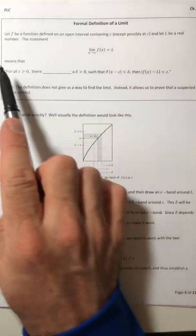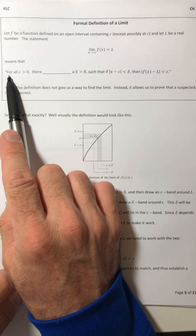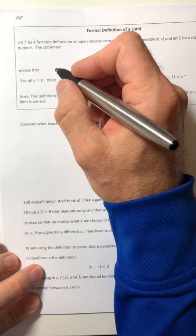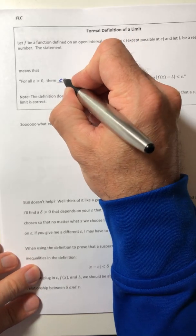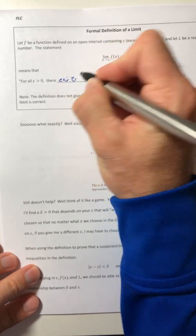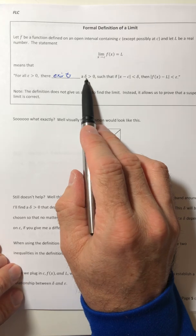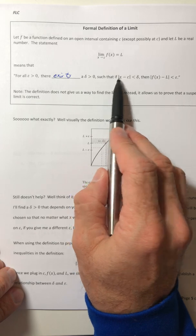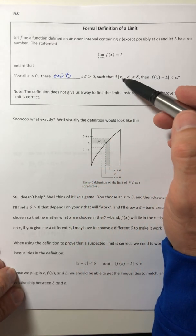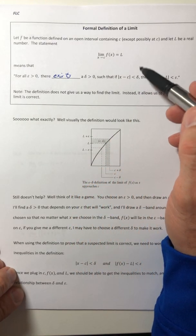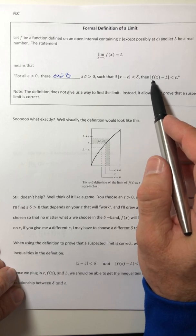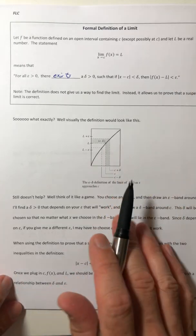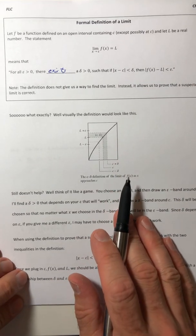For all epsilon greater than zero, there exists a delta greater than zero such that if the absolute value of X minus C is less than delta, then the absolute value of F of X minus L is less than epsilon. So that is the formal definition of a limit.